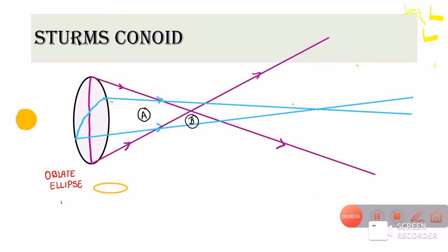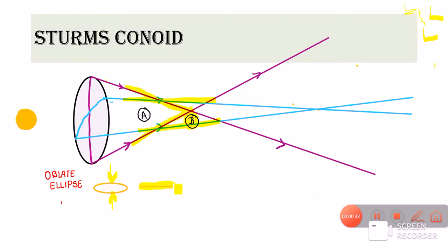Now imagine standing at point B. At this point, the vertical rays have totally converged. However, the horizontal rays are still converging. The oblate ellipse is compressed further vertically but not yet compressed horizontally, so what we get is a horizontal line at point B, because the vertical rays have totally converged there.